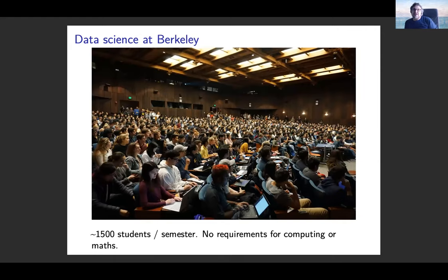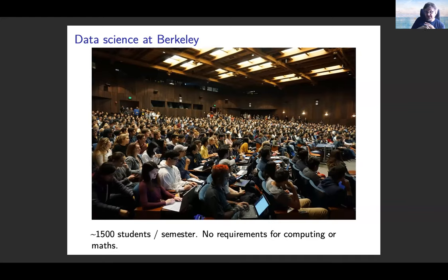This is relevant to online teaching because Berkeley has a no-requirements foundation of data science course for first and second year undergraduates, which is absolutely massive. This is their largest lecture hall — basically a concert hall — 900 people fit in it, but the whole course is 1,500 people. So they have to do something very similar to what we're going to have to do in terms of online teaching; they've had to do it for a while now.